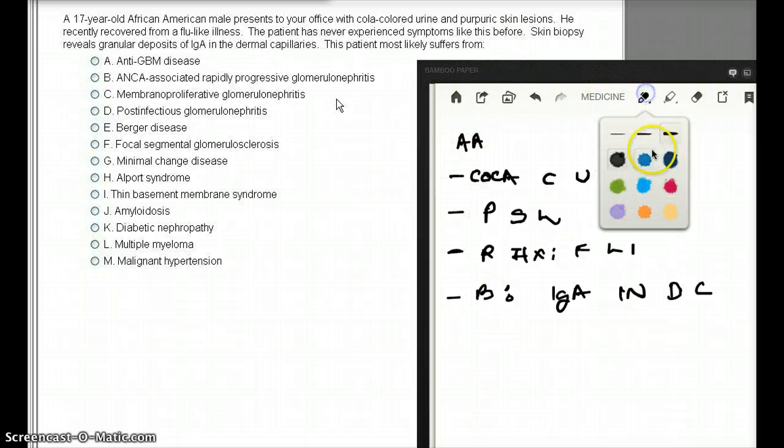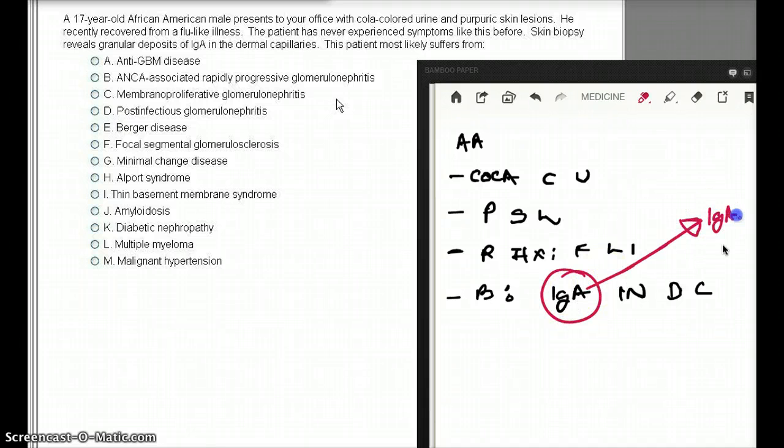So the biggest clue here is really IgA in dermal capillaries, which pretty much should say that this is IgA nephropathy. Another name for it is going to be Berger disease, either one of them. So when I look down, I see that choice E is Berger disease.